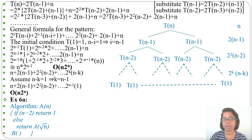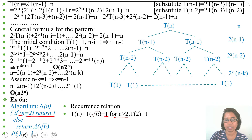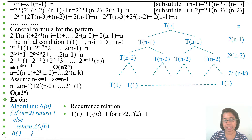So its recurrence relation will be T(n) = T(√n) + 1, where T(√n) is due to the recursive call on √n, plus 1 if function b's running time is O(1). This is true for n greater than 2, and the initial condition is T(2) = 1. Now we have the recurrence relation — let's apply the backward substitution method.